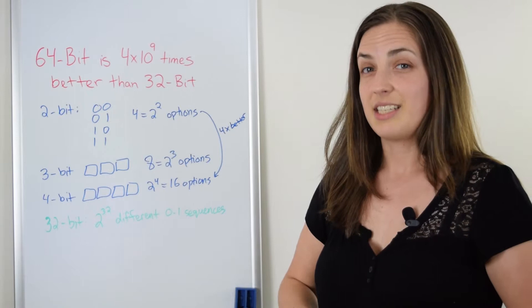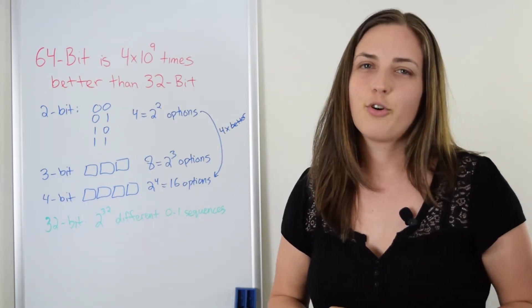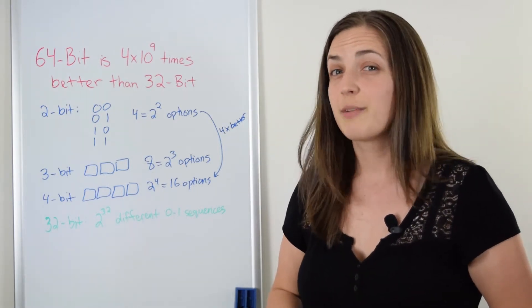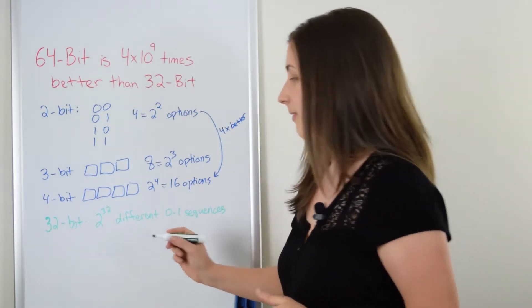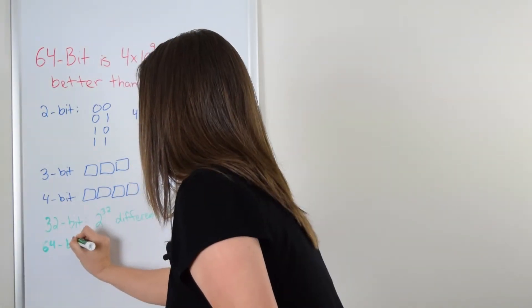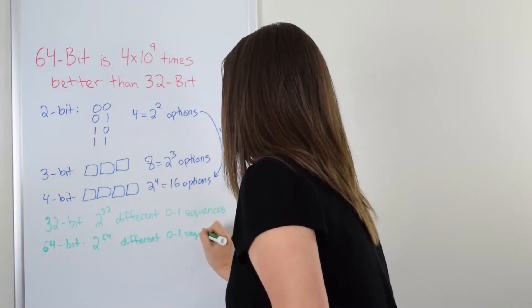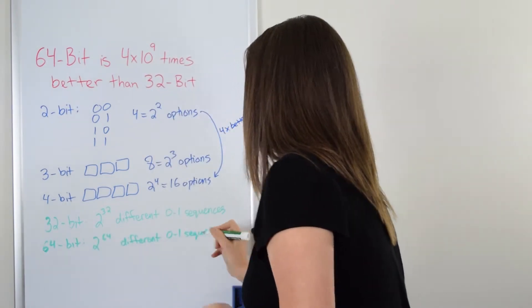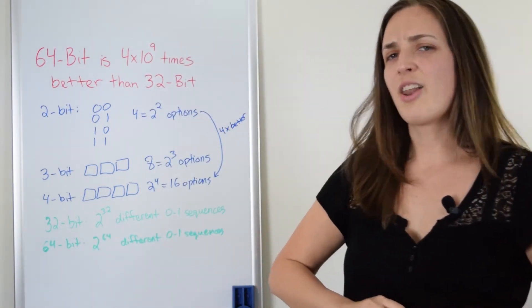Let's think about the 64-bit system. In a 64-bit system, we're going to have two to the power of 64 different possibilities.